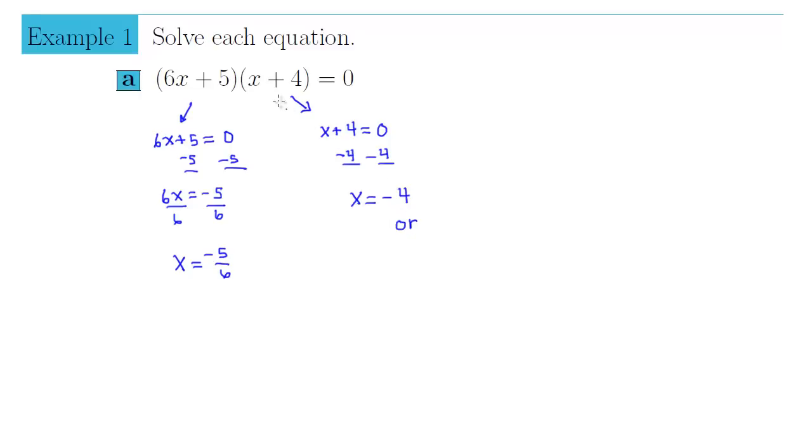We can check. When you substitute negative 4 back into this factor, you get negative 4 plus 4, which is zero. Perfect. When you take negative 5 sixths and plug it back into this factor, multiply it by 6, that gives us negative 5 plus 5, that also gives us zero. Zero times anything is zero.